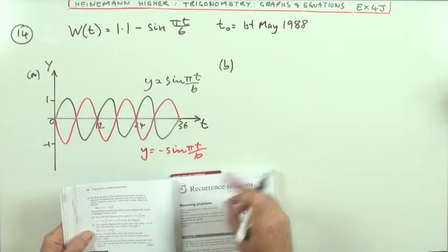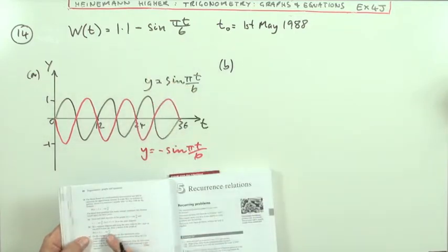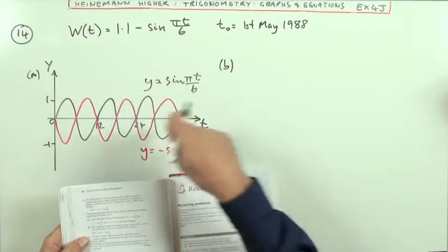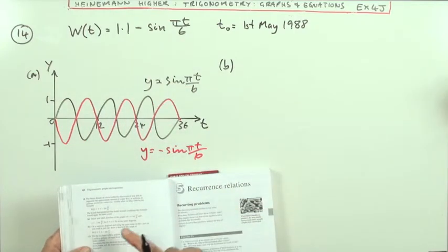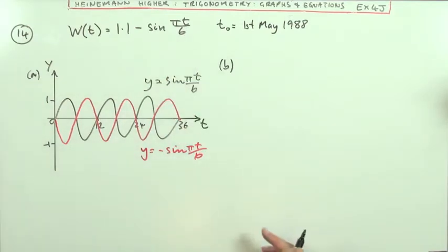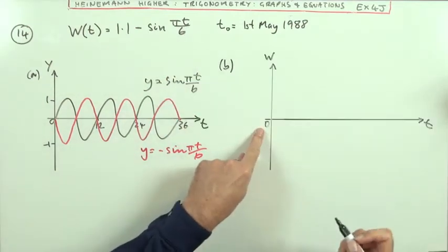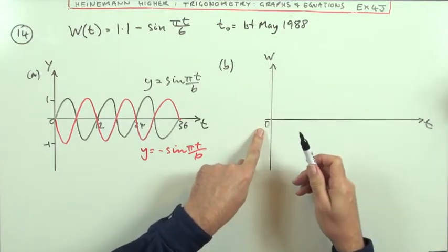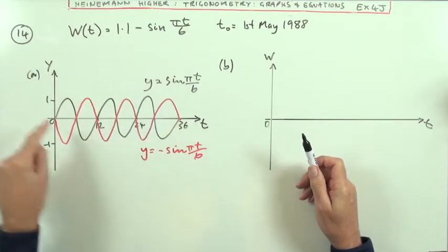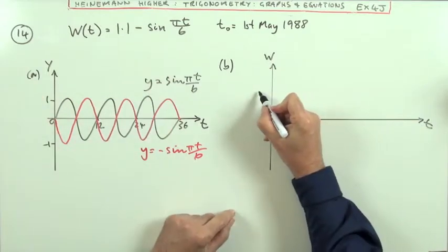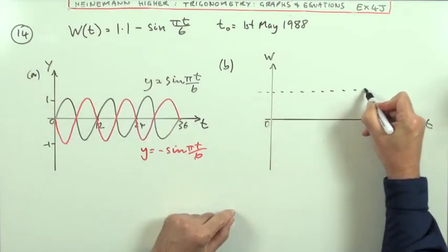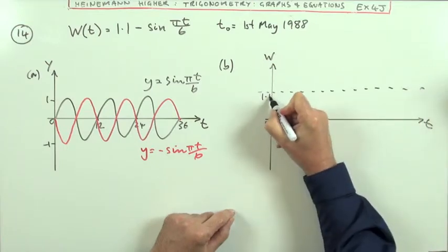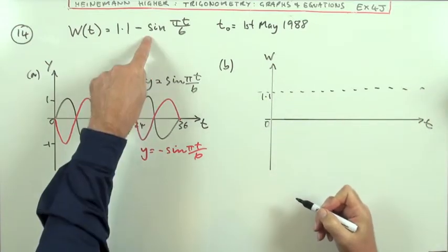Part b, another diagram, only this time we're going to draw that. On a separate diagram, using the same scale, so it's going up to 36, draw the sketch of this thing. Right, so I'll need the axis, like this, only this time it says w of course, and it's going to start at 1.1. So that means it's going to oscillate about a line, which is at 1.1.